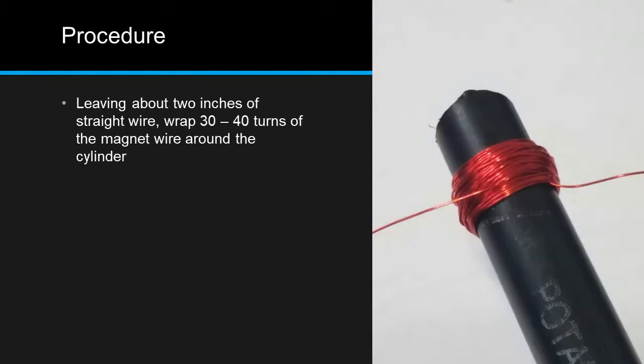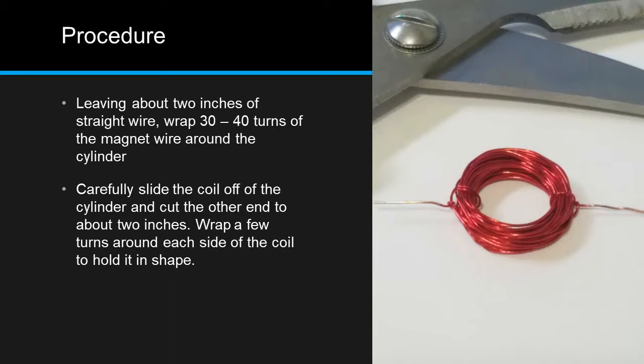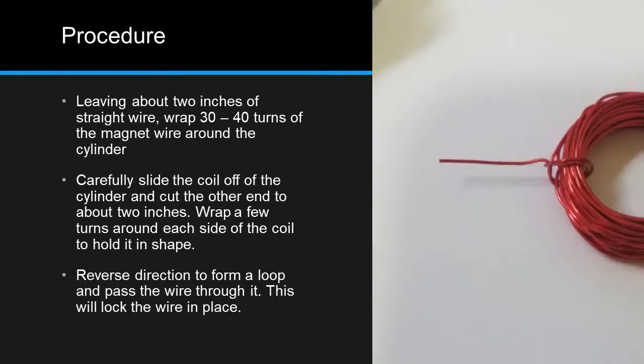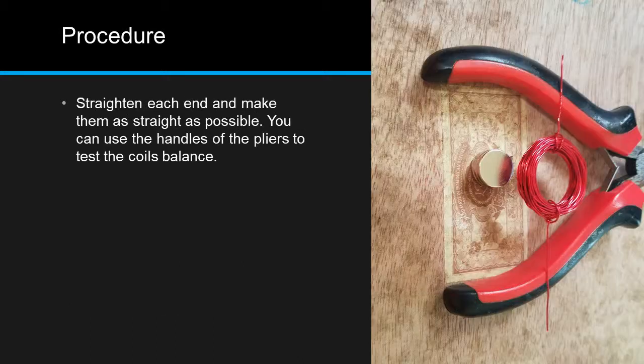Leaving about two inches of straight wire, wrap 30 to 40 turns of the magnet wire around your cylinder. Carefully slide the coil off of the cylinder and cut the other end to about two inches. Wrap a few turns around each side of the coil to hold it in shape. Then reverse direction to form a loop and pass the wire through it. This will lock each wire in place. Straighten each end and make them as straight as possible. You can use the handles of the pliers to test the coil's balance.